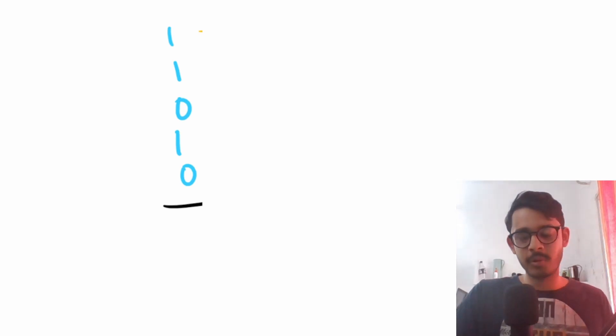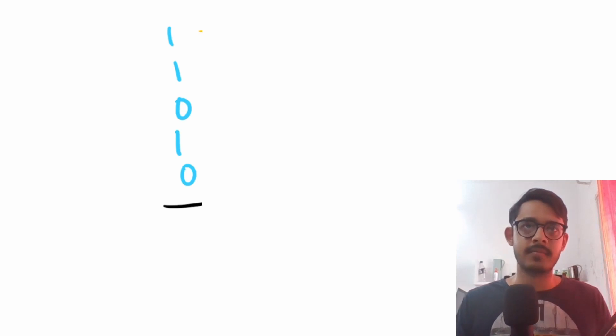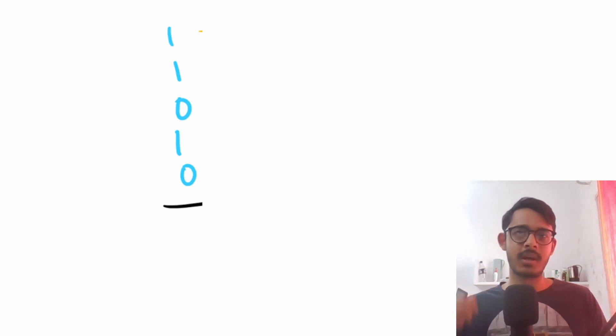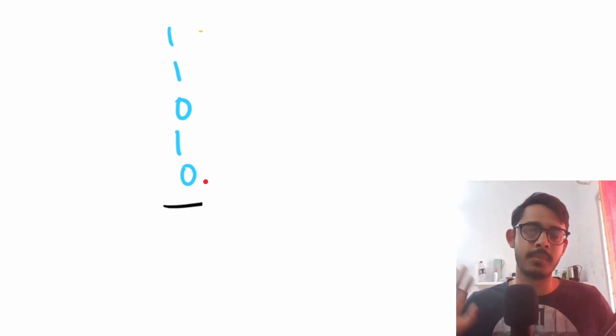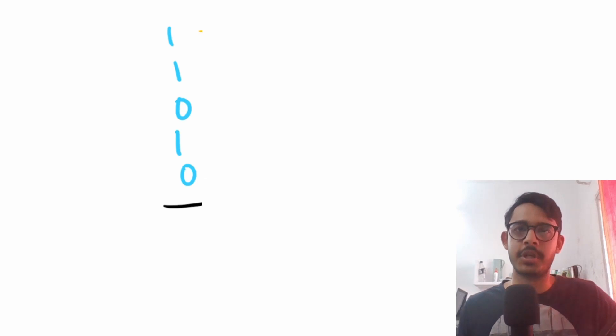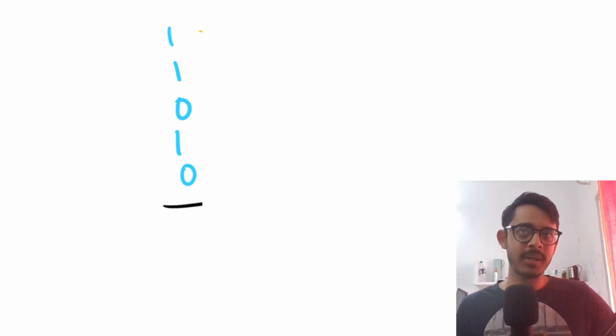We've hit a dead end with the O(n²) brute force. Optimizing it isn't straightforward, and even writing more test cases won't easily reveal a pattern. Whenever you're stuck, it's good to change your perspective and flip things around. Instead of taking two integers and comparing their bits pairwise, what if we write down all numbers in a single line?